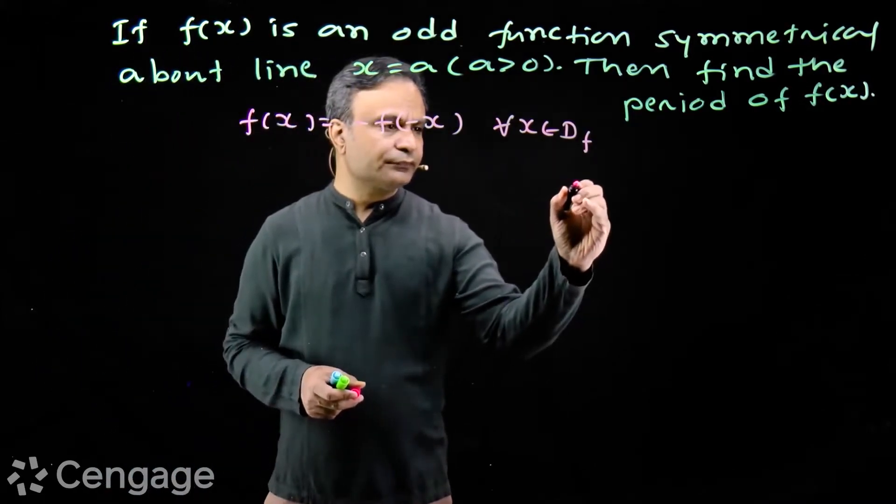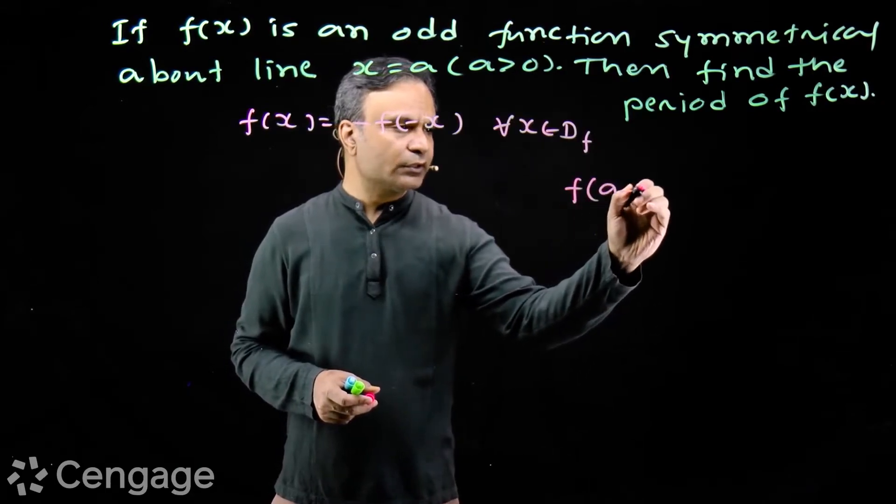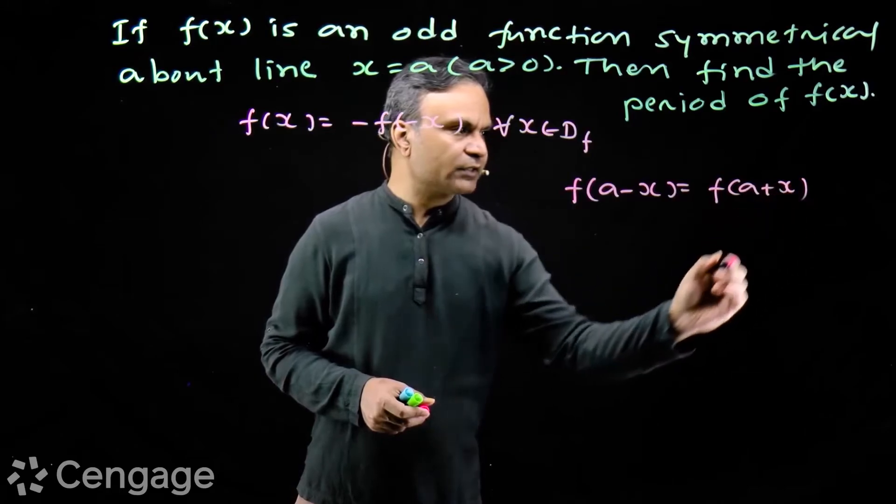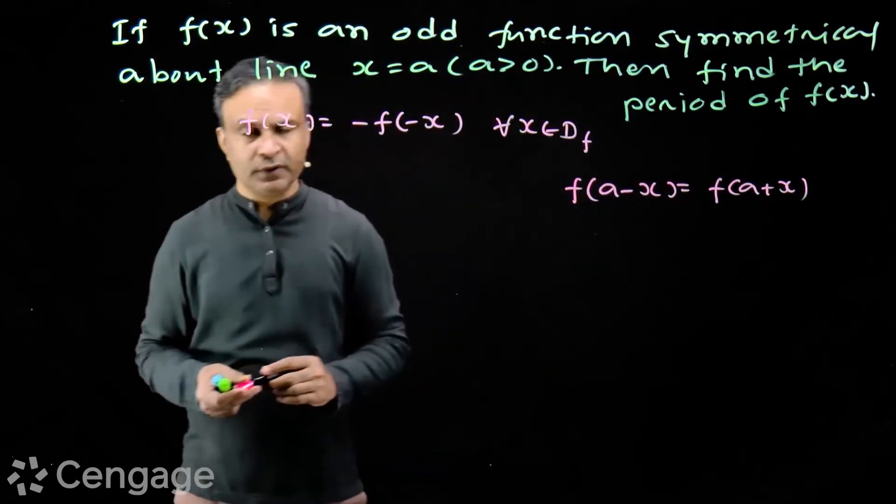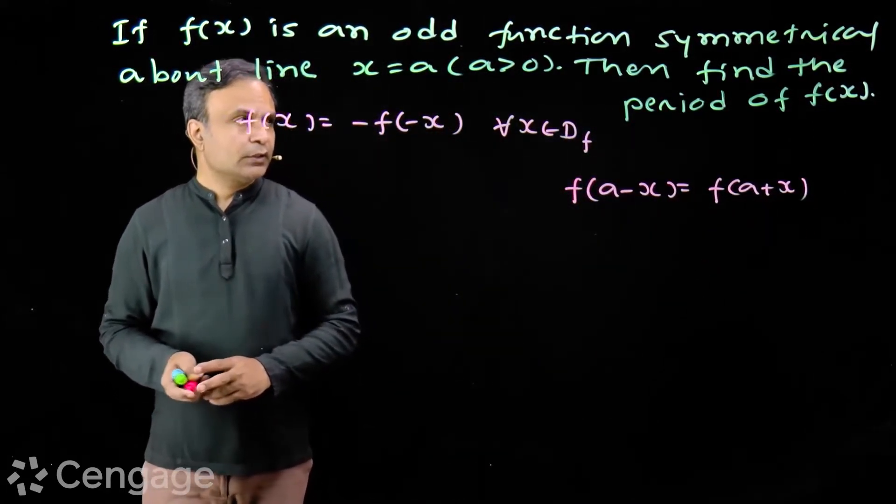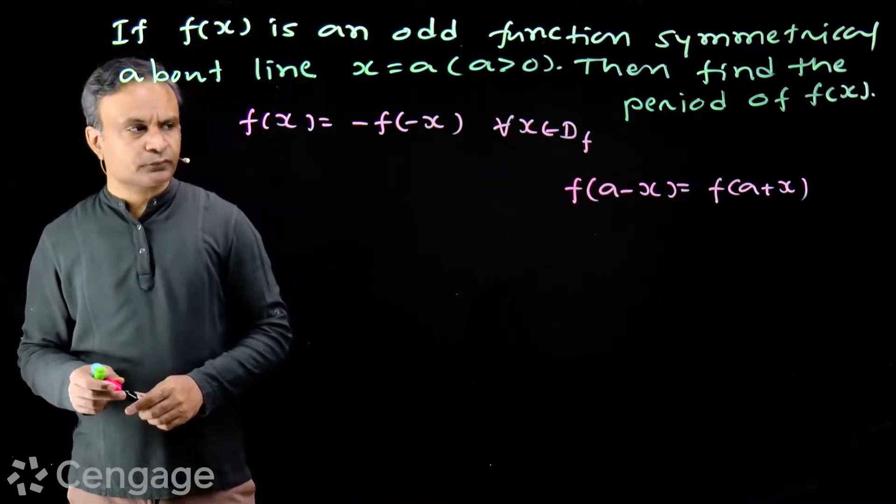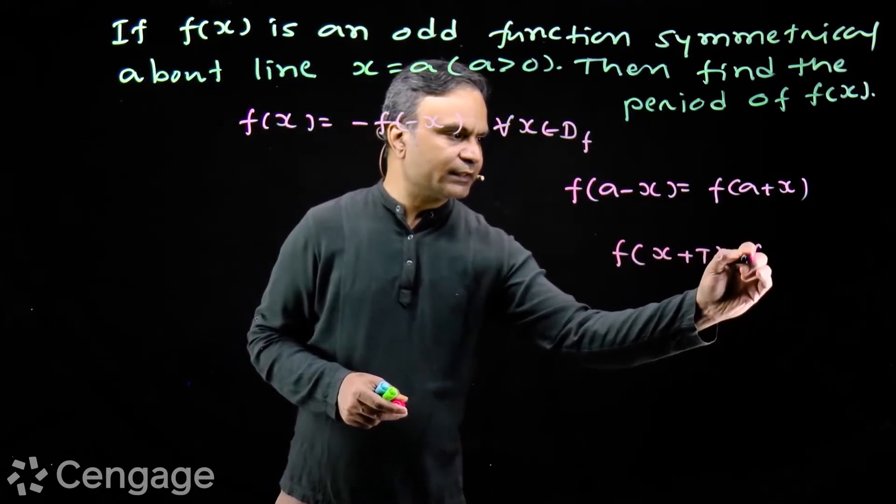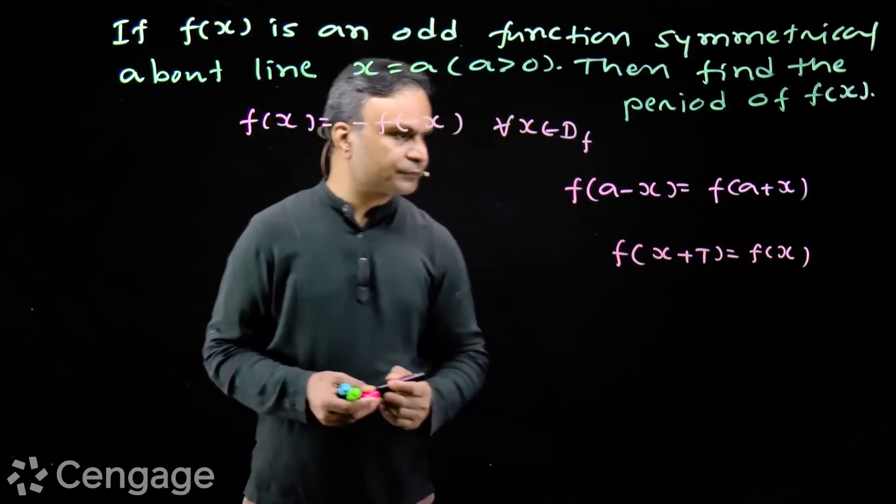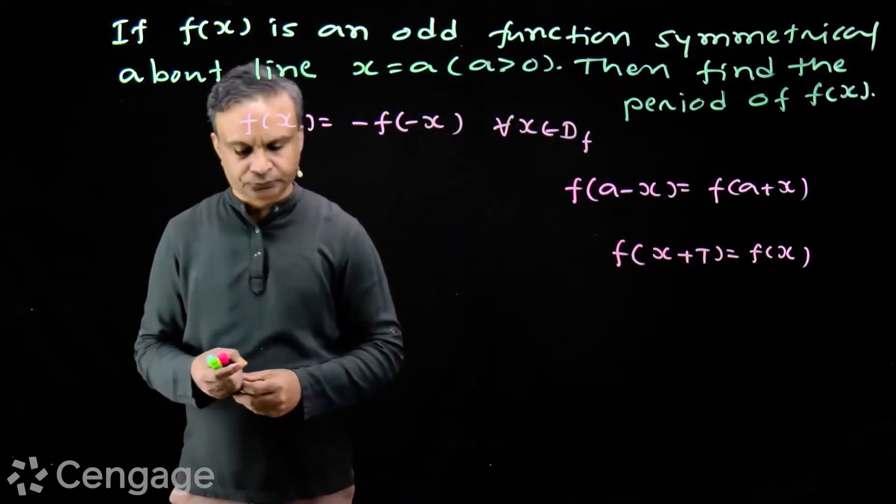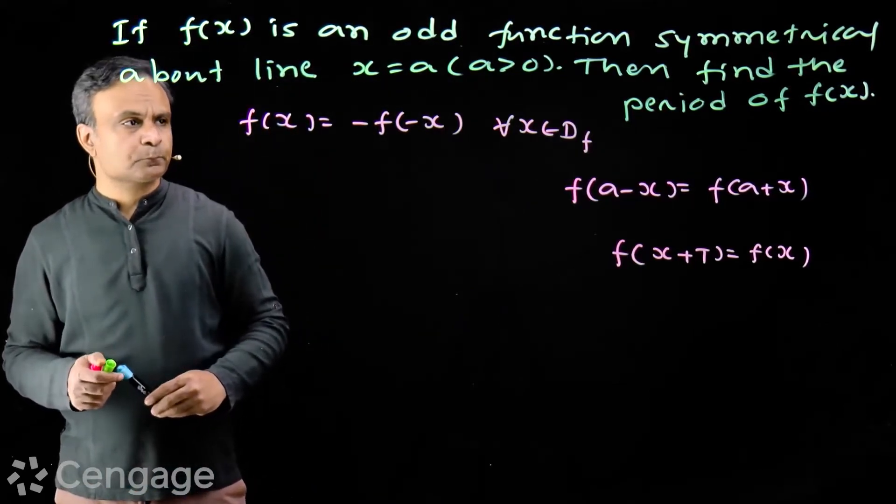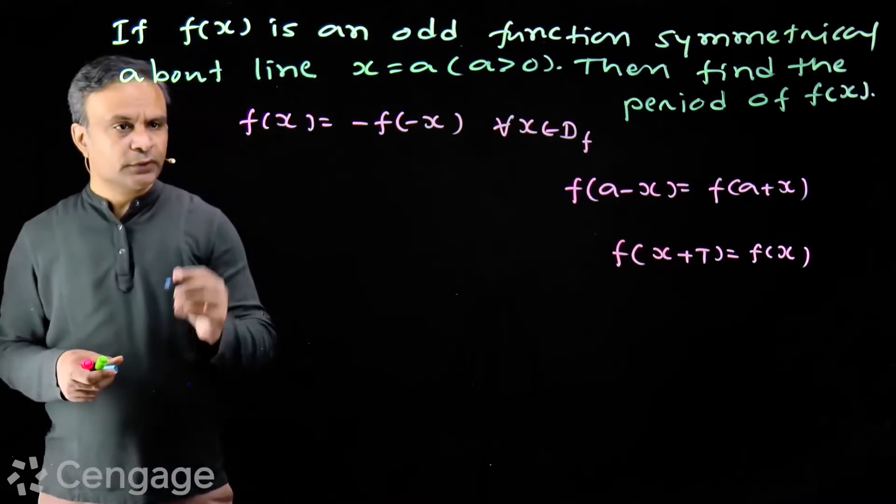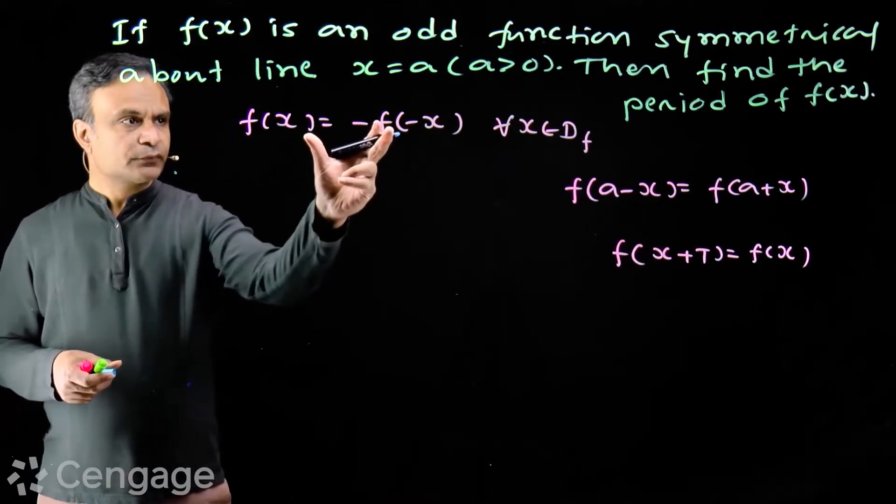So it will satisfy this equation: f(x) = -f(-x) for all x belongs to domain of function. Also function is symmetrical about line x = a, so it will satisfy this relation: f(a-x) = f(a+x) for all x belongs to domain of function.